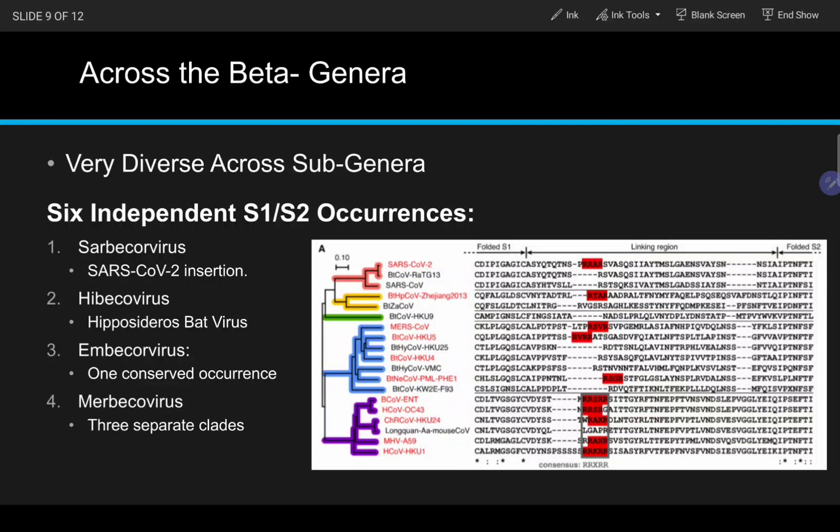Contrastingly, the Embecovirus cleavage sites are all well conserved, suggesting a common ancestor. Collectively, this provides six different examples of the furin cleavage site occurring independently.